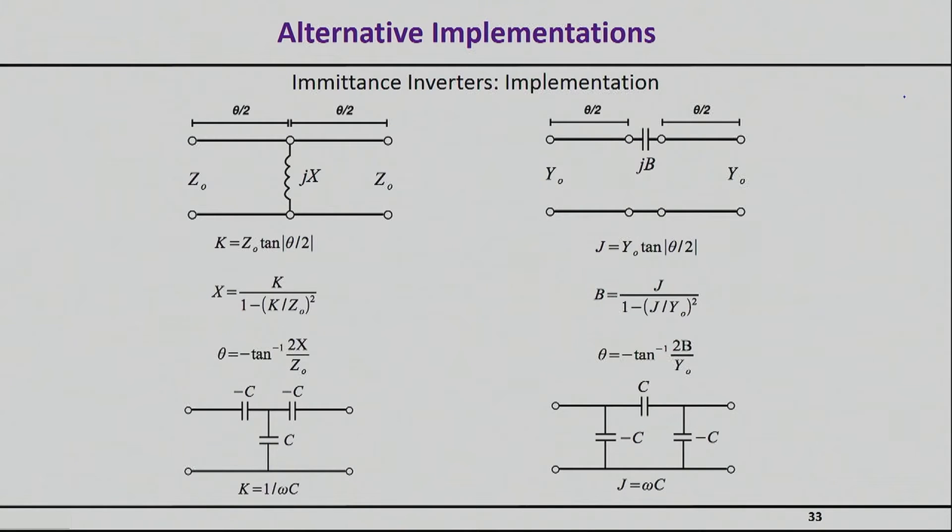Now, realizations of inverters are not just done with transmission lines. People have invented other stranger elements that do exactly the same thing, some of which I'm actually showing you right here. So, for example, this very first element is something that includes a transmission line. Here you can see the electrical length of the transmission line, and it includes a shunt inductor.